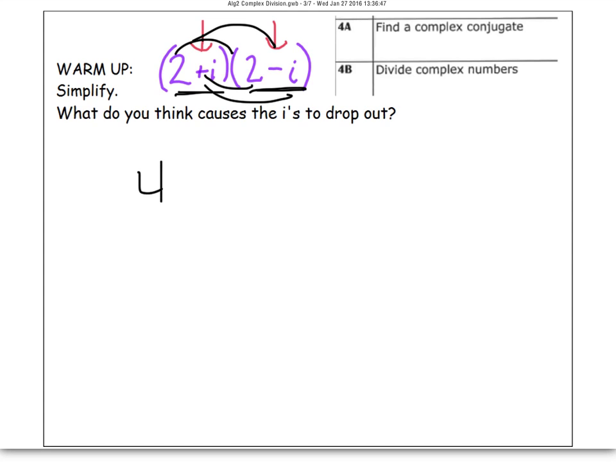you're going to have 2 times 2 is 4, 2 times negative i is negative 2i, i times positive 2 is plus 2i. A positive i times a negative i is negative i squared.